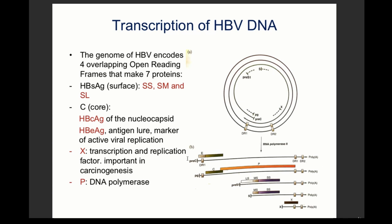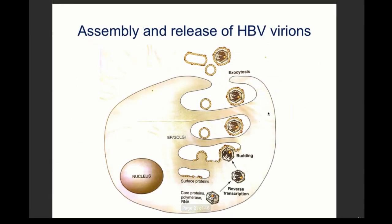The genome encodes seven different proteins: the surface antigen in three forms (short SS, medium SM, and long SM); the core protein (HBcAg) of the nucleocapsid; the HBeAg, which is a marker for viral replication; the X transcription and replication factor, important for carcinogenesis; and the DNA polymerase.